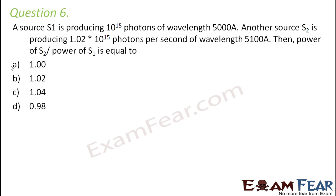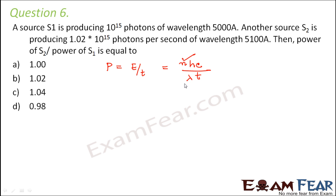Question number 6. A source S1 is producing 10 to the power 15 photons per second of wavelength 5000 angstroms. Another source S2 is producing 1.02 times 10 to the power 15 photons per second of wavelength 5100 angstroms. Then power of S2 by power of S1 is equal to? First let us find the relationship between power and wavelength. Power is energy per unit time, and energy of one photon is Hc by lambda, so energy of n photons is nHc by lambda per unit time.